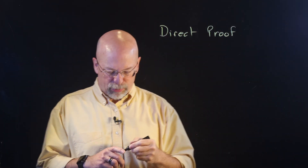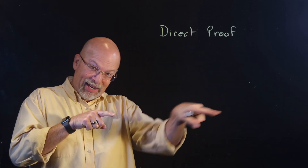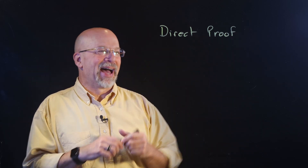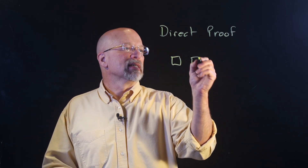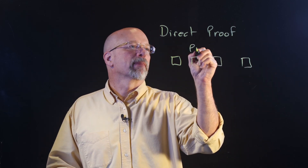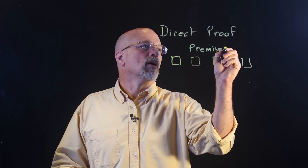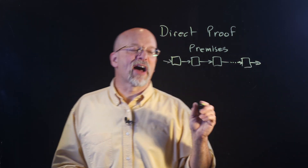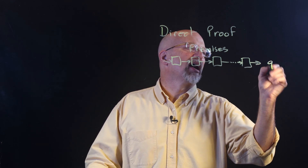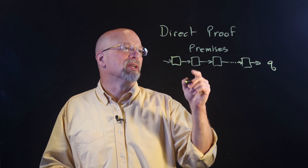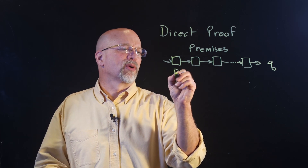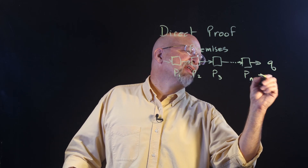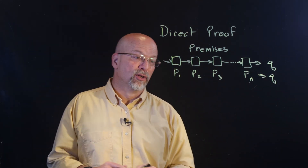Whenever you look at a direct proof, what you're talking about is getting from point A to point B — a direct route. We're not going through any sort of bypass. What you've got are these things called premises, and we're going from one to the next until we get to some final stage where we've defined our conclusion. Premises — another word: hypotheses. So we've got P1, P2, P3, all the way to PN, and eventually that is enough to justify the conclusion.